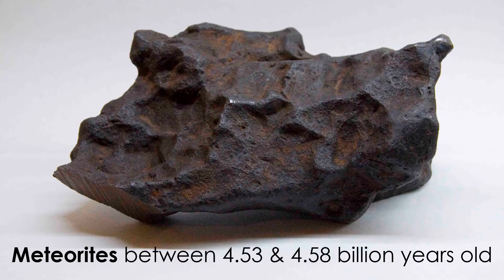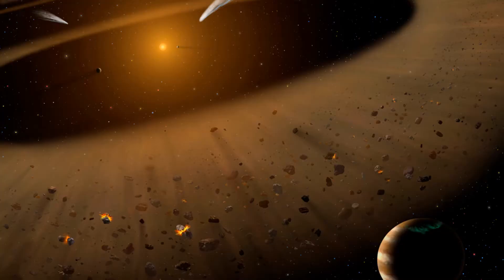Radiometric dating of meteorites shows that most space rocks in our solar system are between 4.53 and 4.58 billion years old, indicating that our solar system, and probably our own planet, are at least that old as well. Of course, the formation of our solar system did not end with accretion.